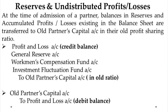The journal entry is something like this. If the balance sheet liability side has given you the balances, then we transfer everything to them — we take them to the opposite side. So the balance sheet liability side items are debited: P&L account credit balance debited, general reserve account debited, workman compensation fund account debited, investment fluctuation fund account debited — to old partners' capital account in their old ratio.